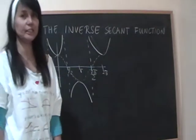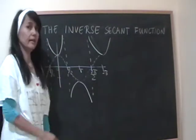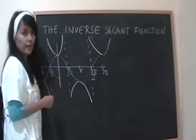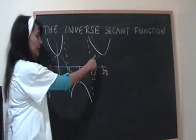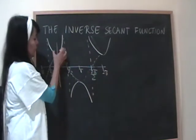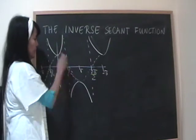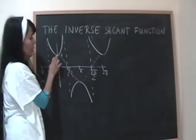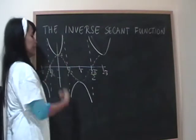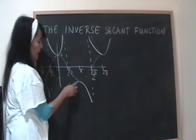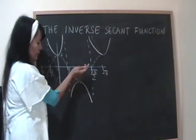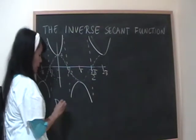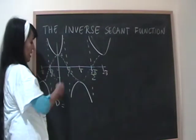The last function is the inverse secant function. Let's recall the basic graph of the secant function. We graphed the secant by looking at the cosine function and taking the reciprocals of its values. From a lowest value of one, it goes up to infinity, and from a highest value of negative one, it goes down to negative infinity.